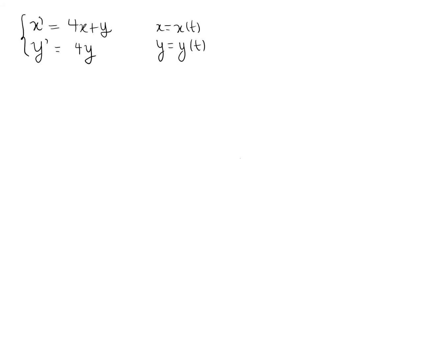In this video we are going to cover solving a system of equations. We have a function x that depends on t and a function y that depends on t. The first equation is the derivative of x equals 4x plus y, and the derivative of y equals 4y. We are interested in finding x and y in terms of t. I will show all steps explicitly and then explain what happens when you look at this problem from a more linear algebra point of view.